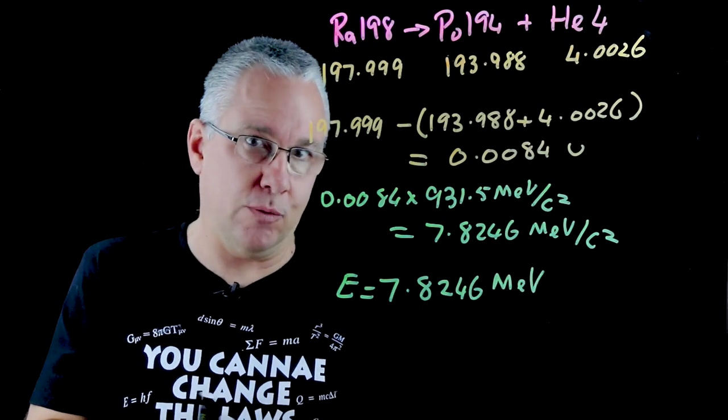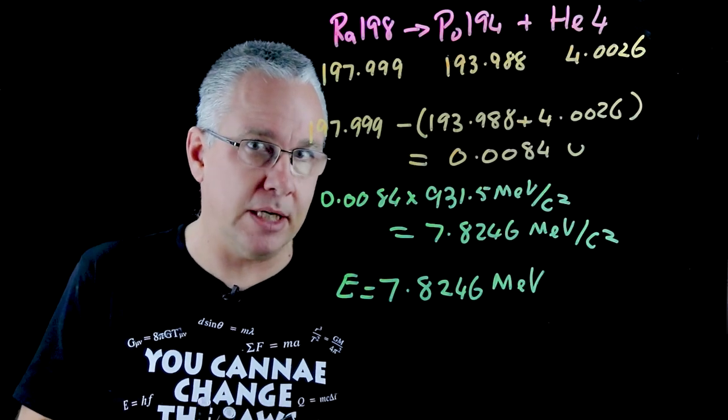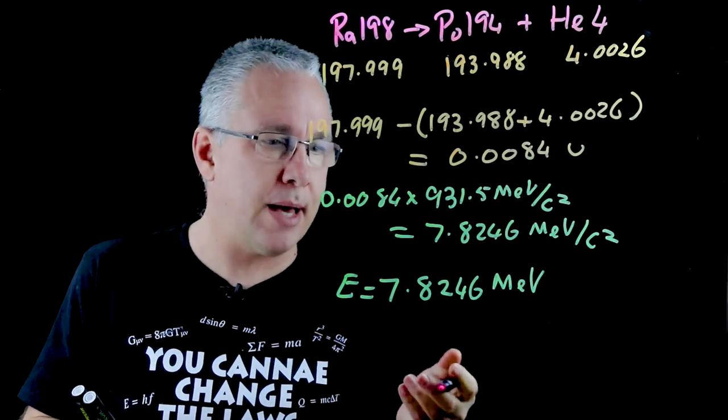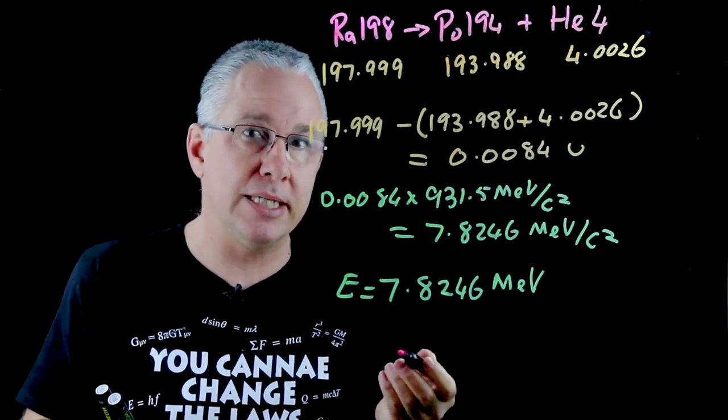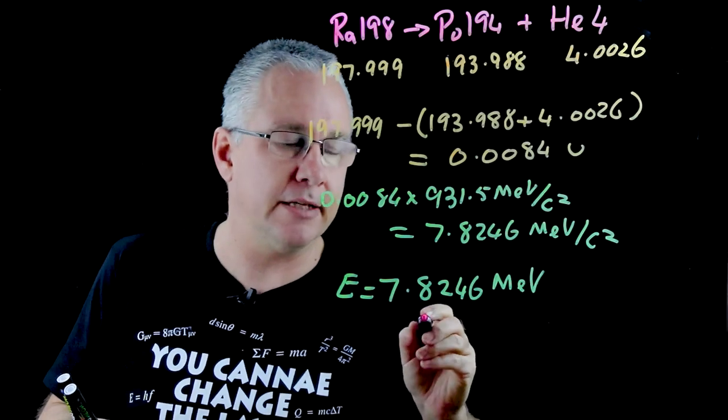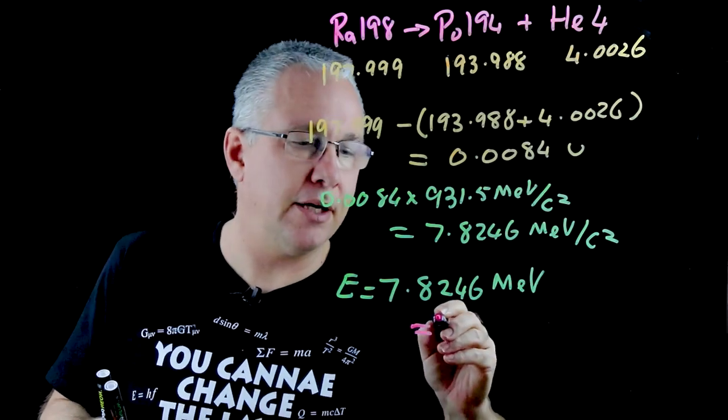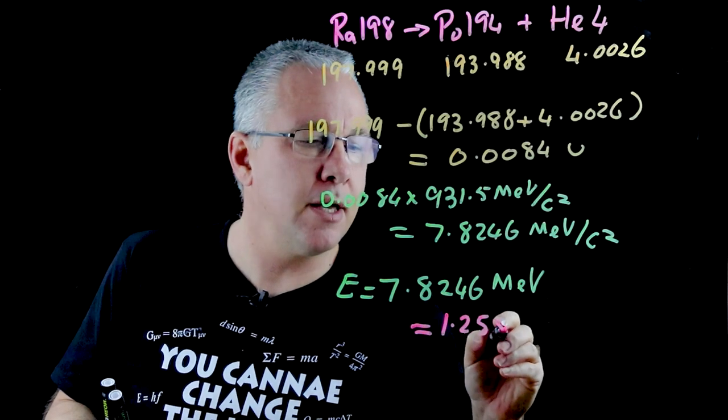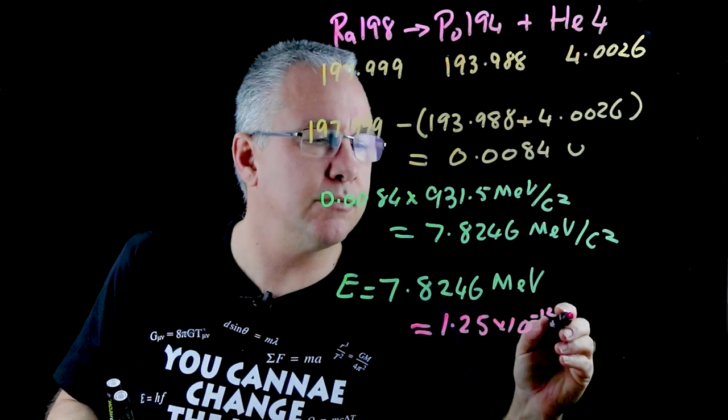Now you can if you wish you can convert that again into joules and of course you do that by simply multiplying this by 1.602 by 10 to the power of negative 19 or you're going to get a value of approximately 1.25 by 10 to the power of negative 12 joules.